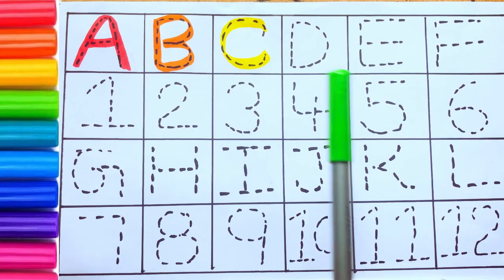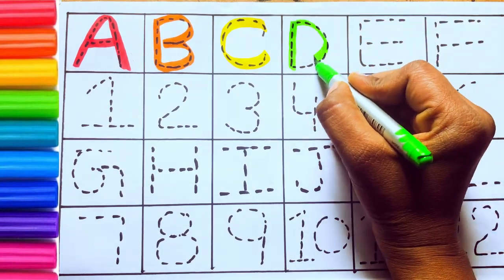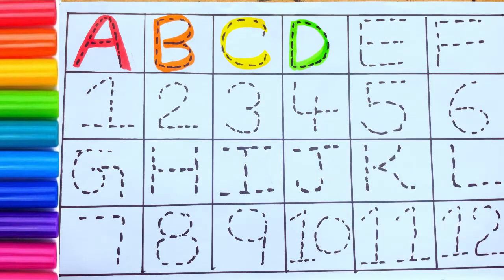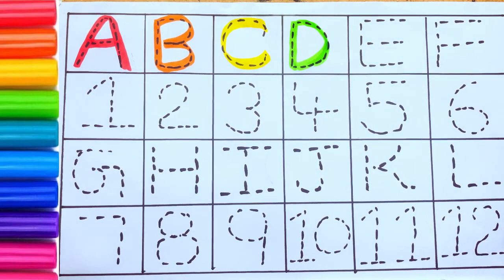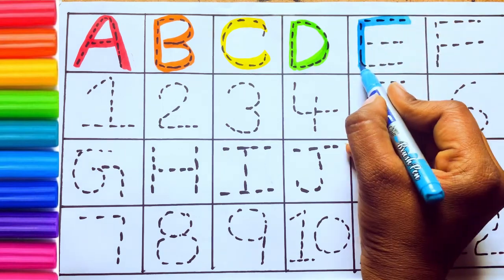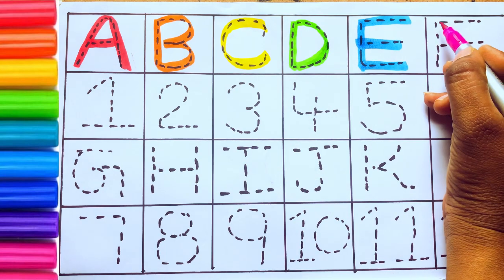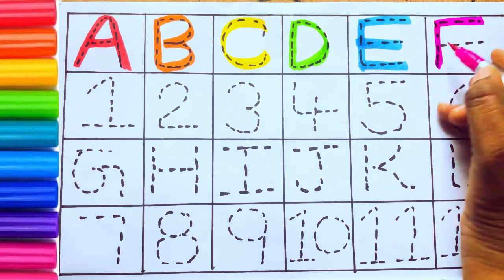Green color. D - D for dog. Sky blue color. E - E for egg. Pink color. F - F for flag.